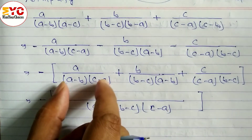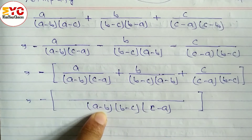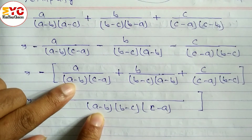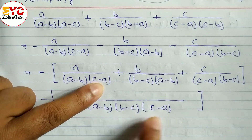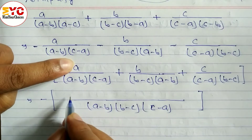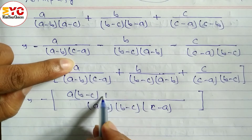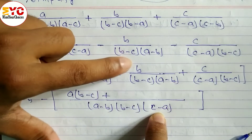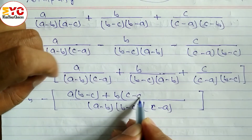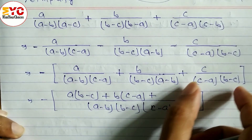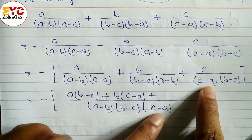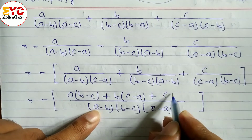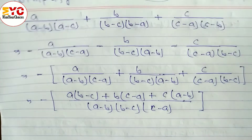Dividing the denominator for each term: For the first term, a minus b and c minus a cancel — remaining is b minus c, multiply by a, giving a(b minus c). For the second term, a minus b and b minus c cancel — remaining is c minus a, multiply by b, giving b(c minus a). For the third term, c minus a and b minus c cancel — remaining is a minus b, multiply by c, giving c(a minus b).